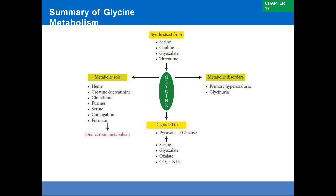Glycine is synthesized from serine involving one-carbon metabolism mediated by tetrahydrofolate (THF). The reaction is catalyzed by serine hydroxymethyltransferase. Glycine can also be formed from threonine, and additionally from ammonia and carbon dioxide catalyzed by glycine synthase involving THF.